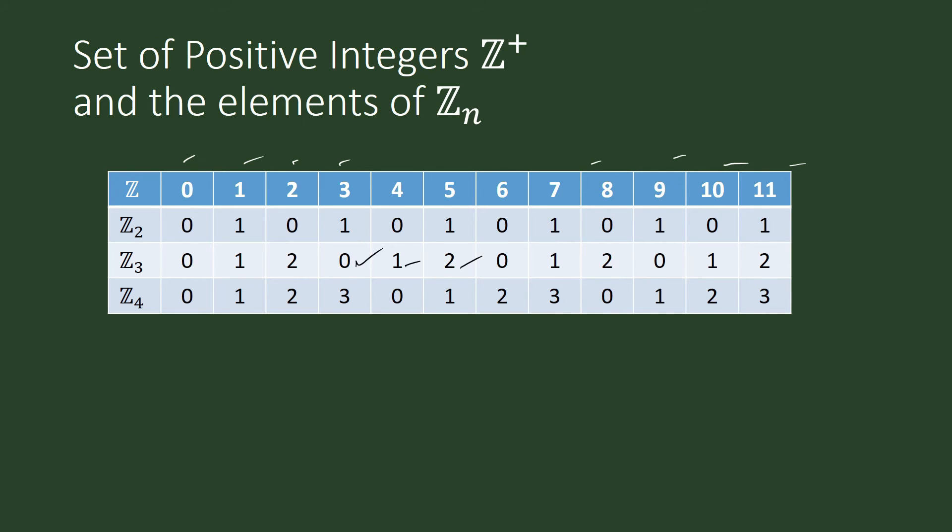The difference between the set of integers and the set of integers under modulo n arithmetic is that when we count elements, we repeat. There is a cycle. It is cycling.